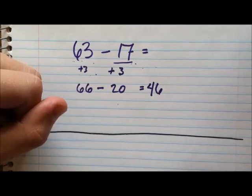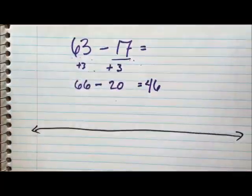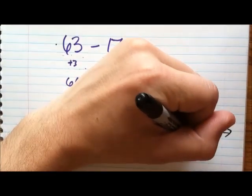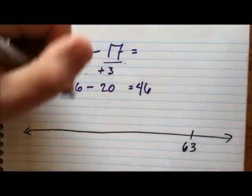Now I'm going to show you what that looks like on a number line. So here's a number line. They're really easy to make. I'm going to put my starting number, which is $63. And my ending number, $17.